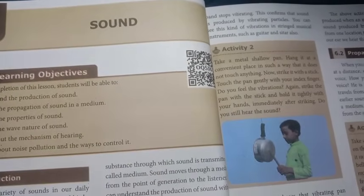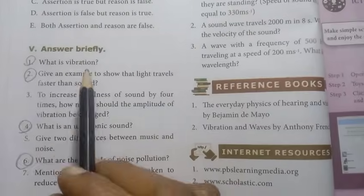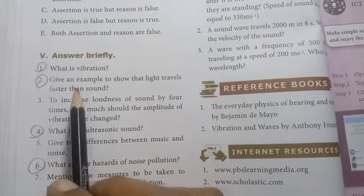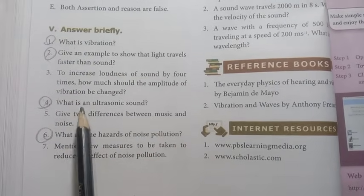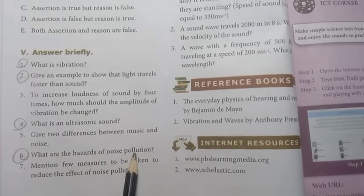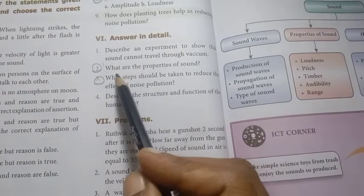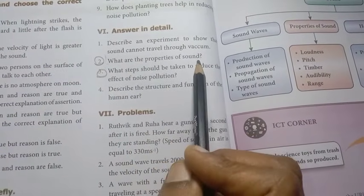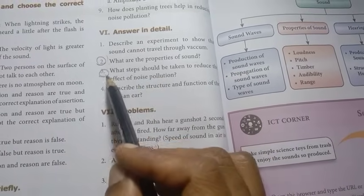Unit 6: Sound, page number 70. Answer briefly: What is vibration? Give an example to show that light travels faster than sound — important. What is ultrasonic sound? — important. What are the hazards of noise pollution? — important. First, second, fourth and sixth are important questions. Define the following terms: amplitude, loudness. Answer in detail: What are the properties of sound? What steps should be taken to reduce the effects of noise pollution? — second and third questions, important detail.